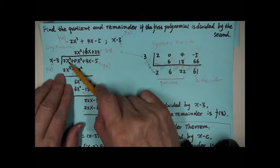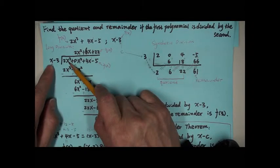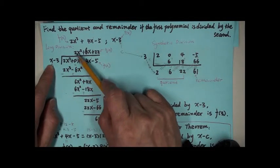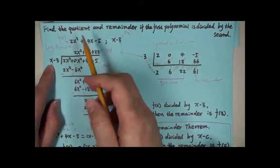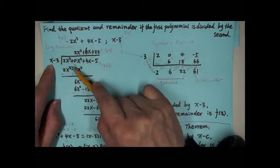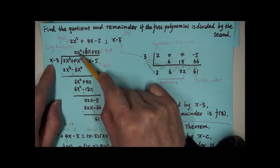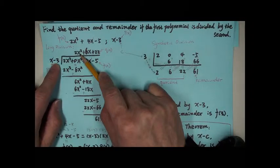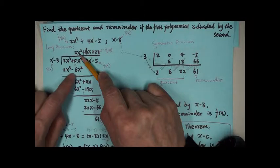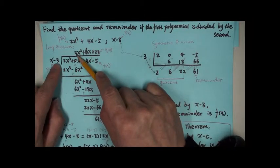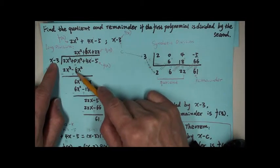Here is 2x cubed, and here is x. So what we need is 2x squared. 2x squared times x: the exponents 1 plus 2 give you 3, so 2x cubed. And then 2x squared times negative 3 gives you negative 6x squared. 2 times 3 negative is negative 6x squared.